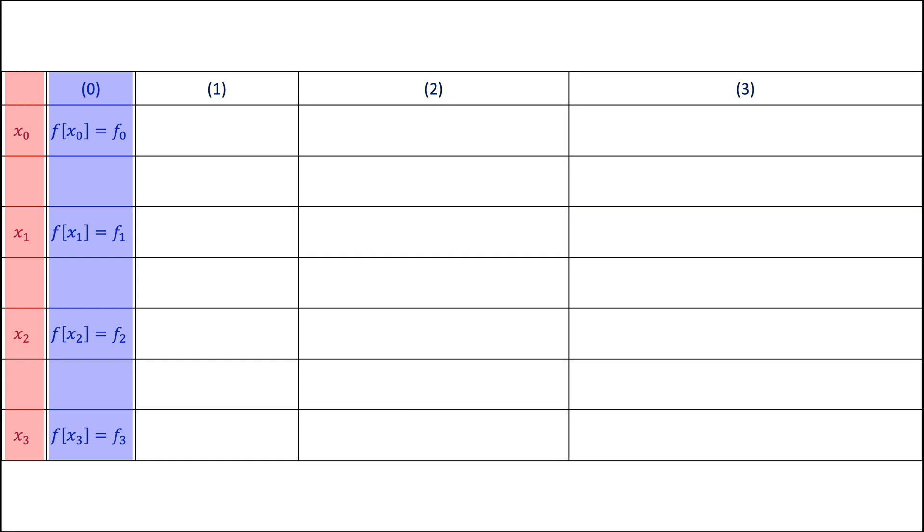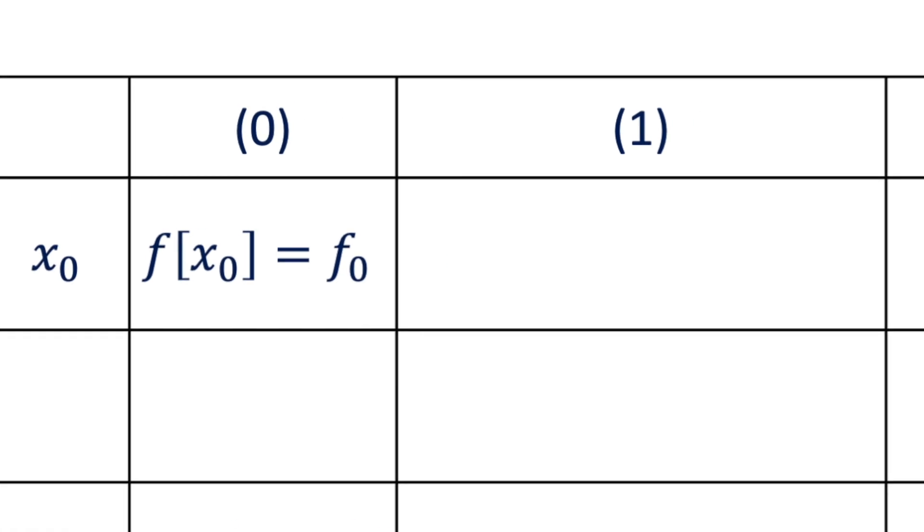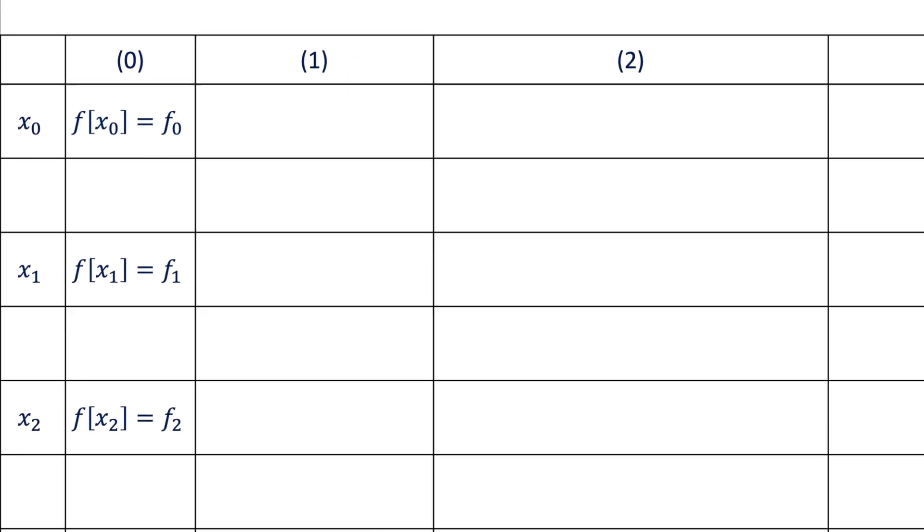The column 0 contains the corresponding f values from the given data set. Note that f with brackets here is not a function notation. It only refers to the corresponding x related to the current column. It will be more clear in the next steps.